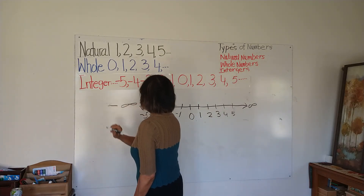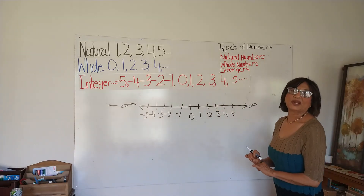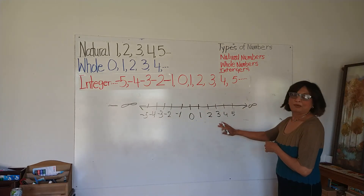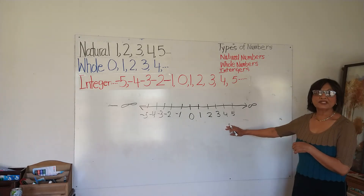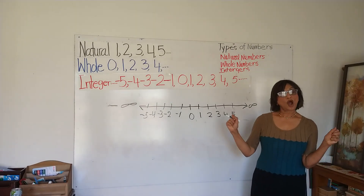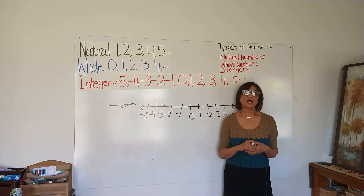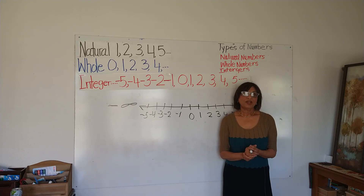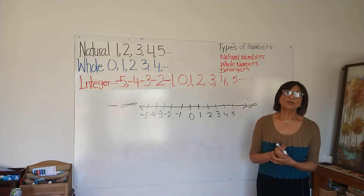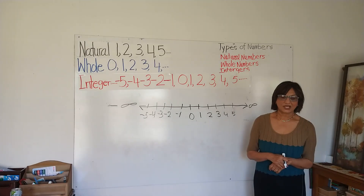I'm going to put a negative infinity sign here. These numbers go forever and forever in both directions. So on this number line we have whole numbers and negative numbers — the combination of the whole numbers and the negative numbers is called integers. This presentation is very simple but very important before we move on to algebra. Thank you for watching, I will see you in the next video.